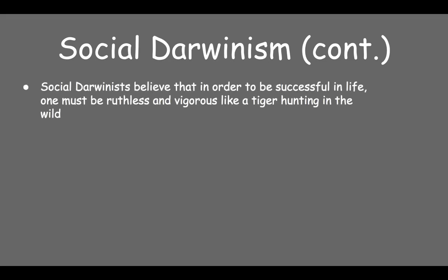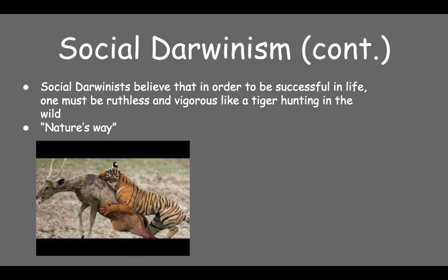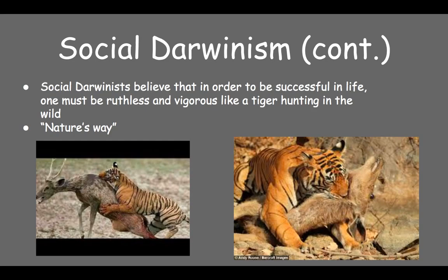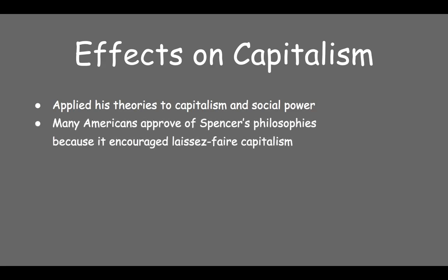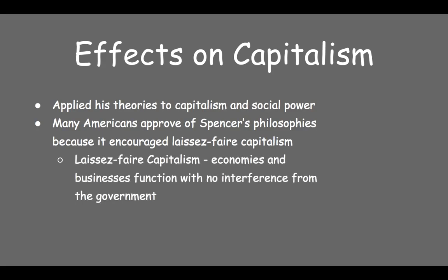In the minds of radical social Darwinists, in order to be successful at anything in life, it is essential that one is ruthless and vigorous — like a tiger killing for food. To them, it is simply the way of nature. Spencer expanded his theory by applying it to what the highest society valued: capitalism and social power. In the late 1800s, many Americans were enthusiastic about Spencer's ideologies, as it encouraged laissez-faire capitalism, meaning that economies and businesses function with no interference from the government.